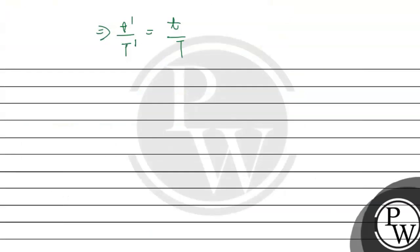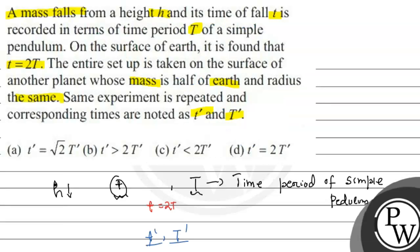That implies small t dash by capital T dash equals 2, which means small t dash equals 2 capital T dash. So option B is the right answer. I hope you have understood this question, best of luck.